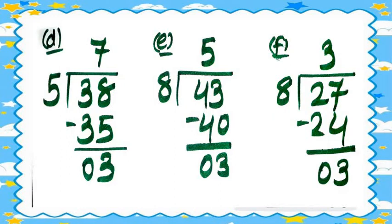Question 3e: 43 divided by 8. In the table of 8: eight ones are 8, eight twos are 16, eight threes are 24, eight fours are 32, eight fives are 40, eight sixes are 48. Since 48 crosses 43, we take eight fives are 40. So 43 minus 40 equals 3. The quotient is 5 and the remainder is 3.